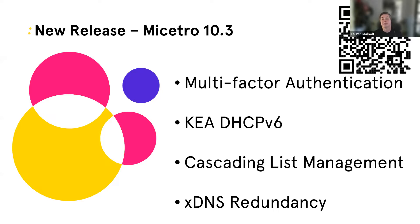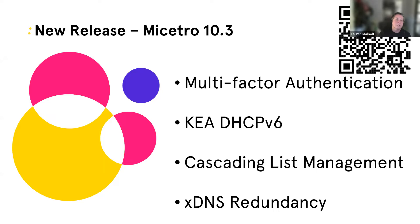We've made huge improvements to our customers' ability to manage what we call cascading lists — those custom properties that let you put in identity information: geographic data, where the server is within the rack, within the city, within the state. We're making that even easier to manage. And last but certainly not least is the topic of discussion for today: the xDNS redundancy capability.